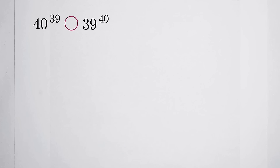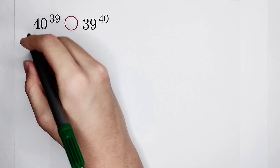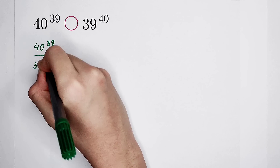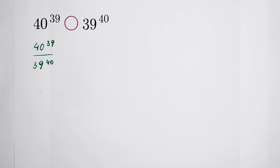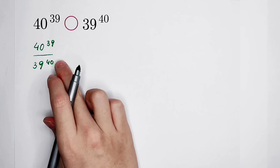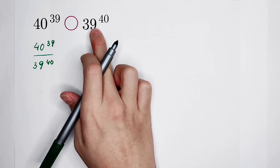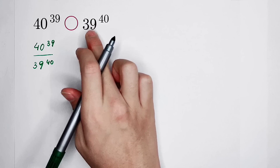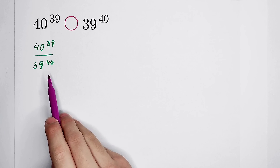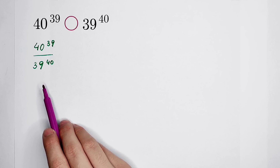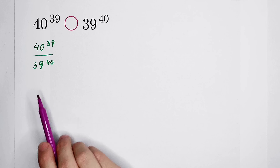Eerily, if we meet this form, we should consider their division. 40 to the power of 39, over 39 to the power of 40. And this result, it should be compared with 1. If it is greater than 1, then the first is greater. If it is equal to 1, then they are equal. And if it is smaller than 1, then the second is bigger. So now we should compare this fraction with 1. But our problem is, this fraction is too complicated. So what should we do?